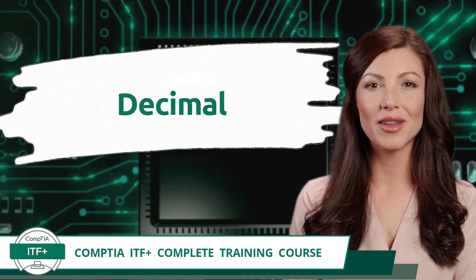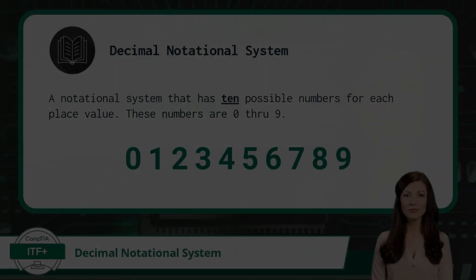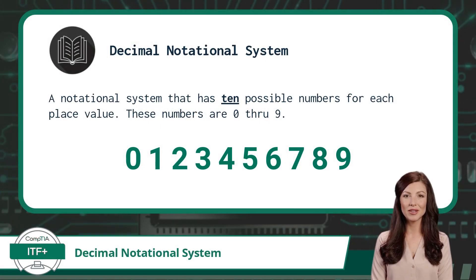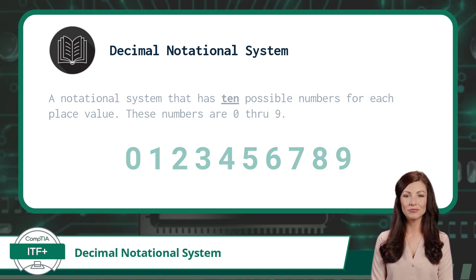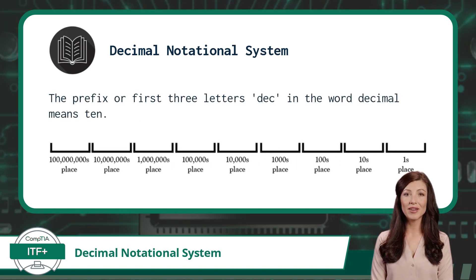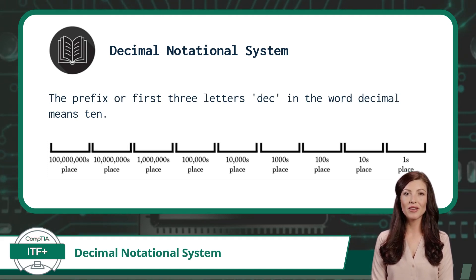The decimal notational system is a notational system that has 10 possible numbers for each place value. These numbers are 0 through 9. The prefix, or first three letters, 'dec,' in the word decimal means 10 and refers to the fact that each place value in a decimal number is 10 times greater than the place value directly to its right.